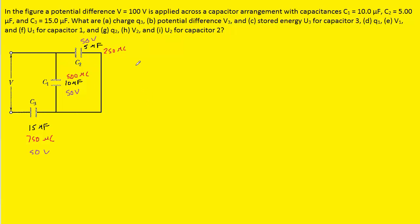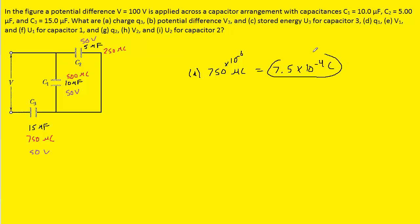We are now ready to answer the questions. Part A asks for charge Q3. Referencing our picture, on capacitor C3 the charge was 750 microcoulombs. That's the correct answer to part A. We can convert to coulombs by multiplying by 10 to the minus 6, giving 7.5 × 10⁻⁴ coulombs — either form is correct.